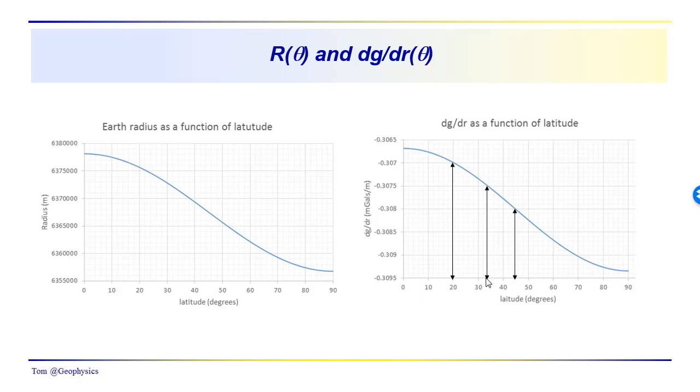And at about 45 degrees latitude minus 0.308. So we can see this dg/dr term getting increasingly negative as we go towards the poles.